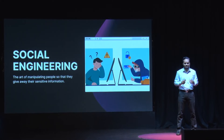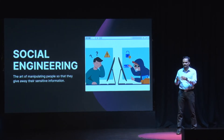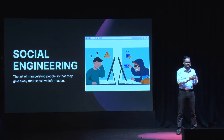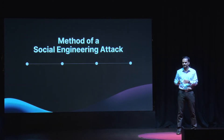What hackers do is they don't hack into systems. They hack into humans, so that humans give away their information. Generally, a social engineering attack consists of four phases.